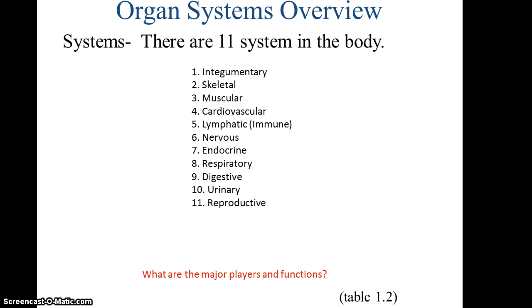In our textbook the body systems are broken down into 11 types. The integumentary system, which is basically the skin and the tissue under the skin. The skeletal system — the bones. The muscular system, which is the skeletal muscles that involve using the bones to provide movement. The cardiovascular system, that of the heart and the blood vessels. And the lymphatic system, which involves the movement of fluids and is often tightly associated with the immune system.